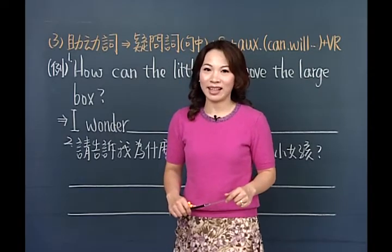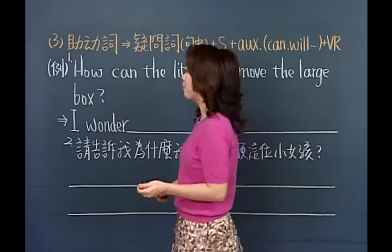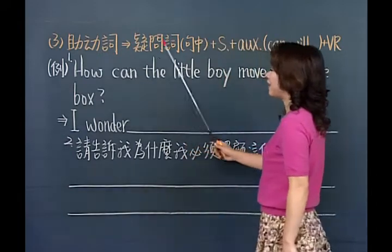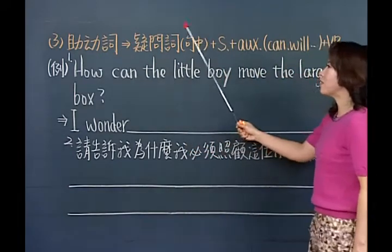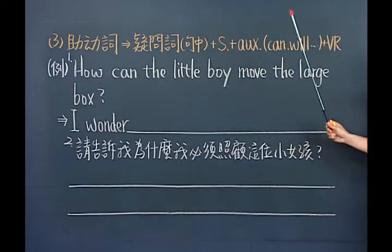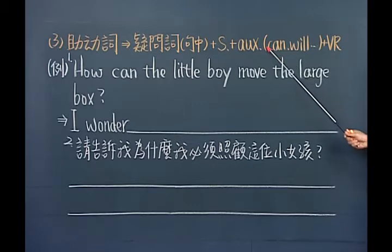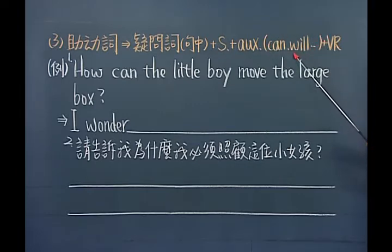Do, Does, Did这三个助动词谢老师习惯称它为无名英雄，因为它纯粹只是在帮助一般动词形成否定句、形成疑问句，或者代替重复的动作。但是在第三点里面我们提到的助动词，当疑问词出现在句中的时候，先看到主词，然后会看到助动词——这一类的助动词跟无名英雄Do, Does, Did是不一样的。